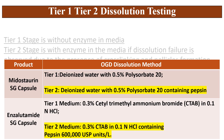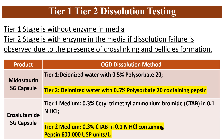Coming to Tier 1 and Tier 2 dissolution testing: Tier 1 is without enzyme in the media, and Tier 2 is with enzyme in the media if dissolution failure is observed due to crosslinking or pellicle formation. For example, Midostaurin soft gelatin capsule and Enzalutamide soft gelatin capsule: Tier 1 uses deionized water with 0.5% polysorbate 20; Tier 2 uses the same media with pepsin. For Enzalutamide tablets, Tier 1 contains CTAB 0.3% in 0.1N HCl and Tier 2 contains pepsin.